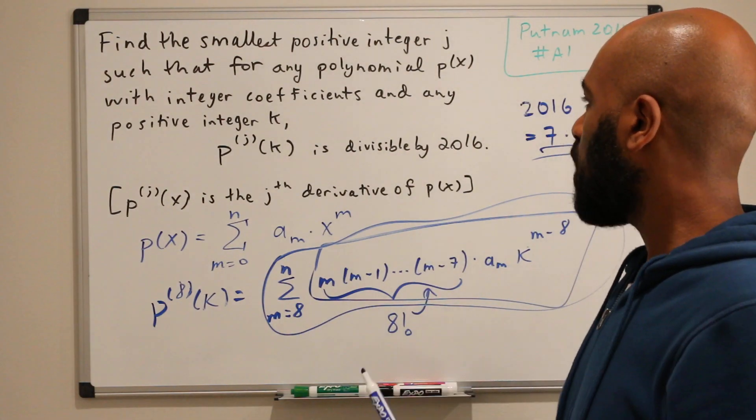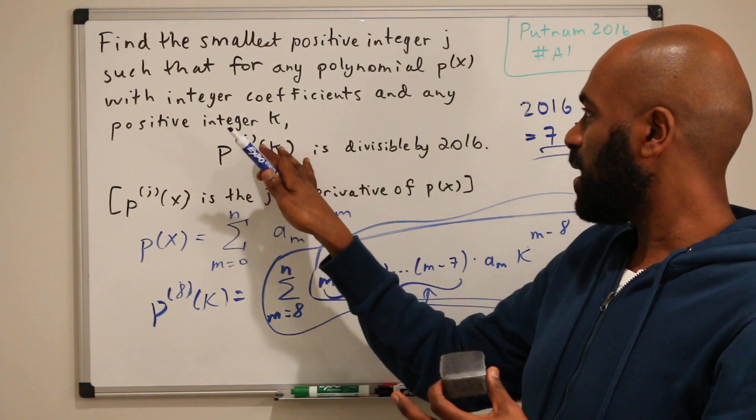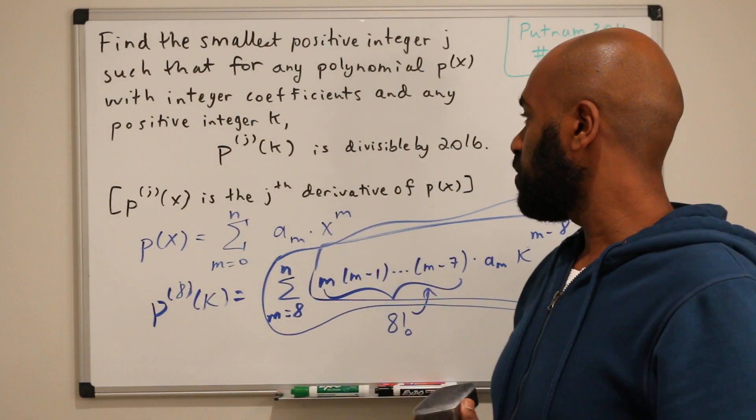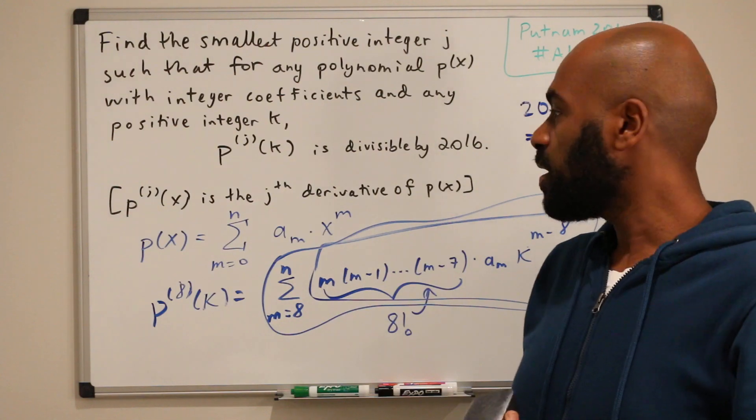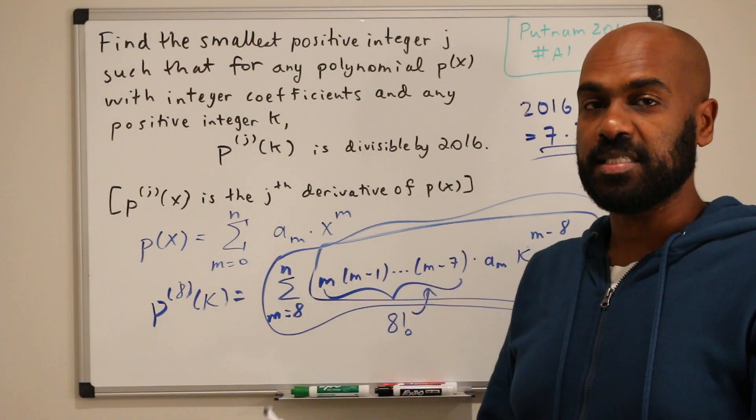Okay, so I think the moral of this problem is, start with simple examples to get a feel of what you're trying to deal with, which is just the smallest positive integer j that you're looking for. And once you have that, see if you can extend it to the generic case and see if it pulls through. Yep, and that's it.